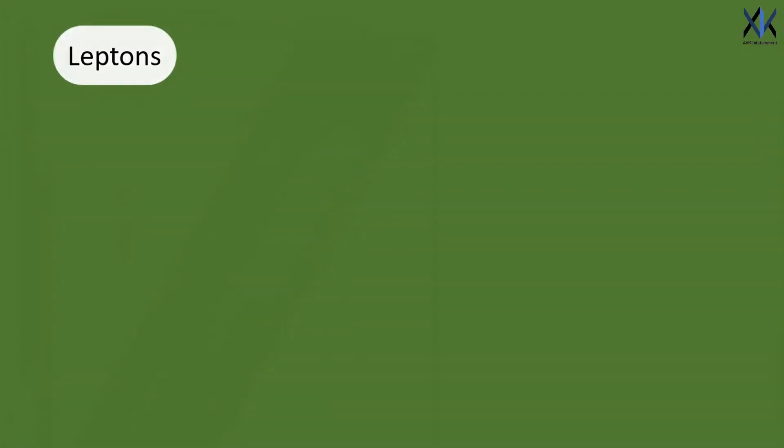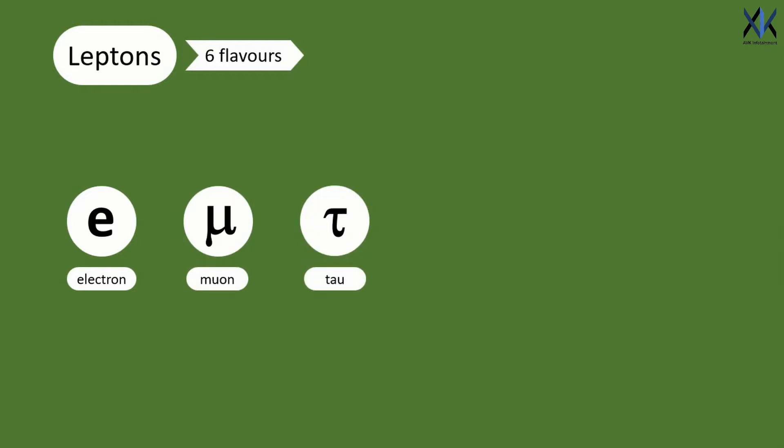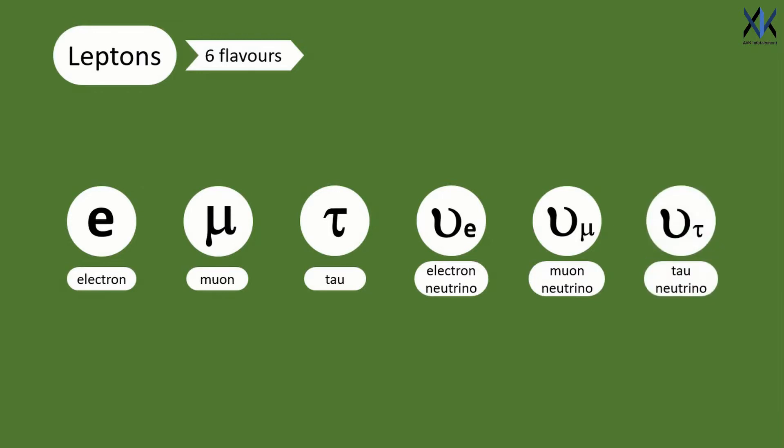Next up is leptons. They too have six flavors. The most famous one is an electron. Remaining five are muon, tau and three types of neutrinos, electron neutrino, muon neutrino and tau neutrino.